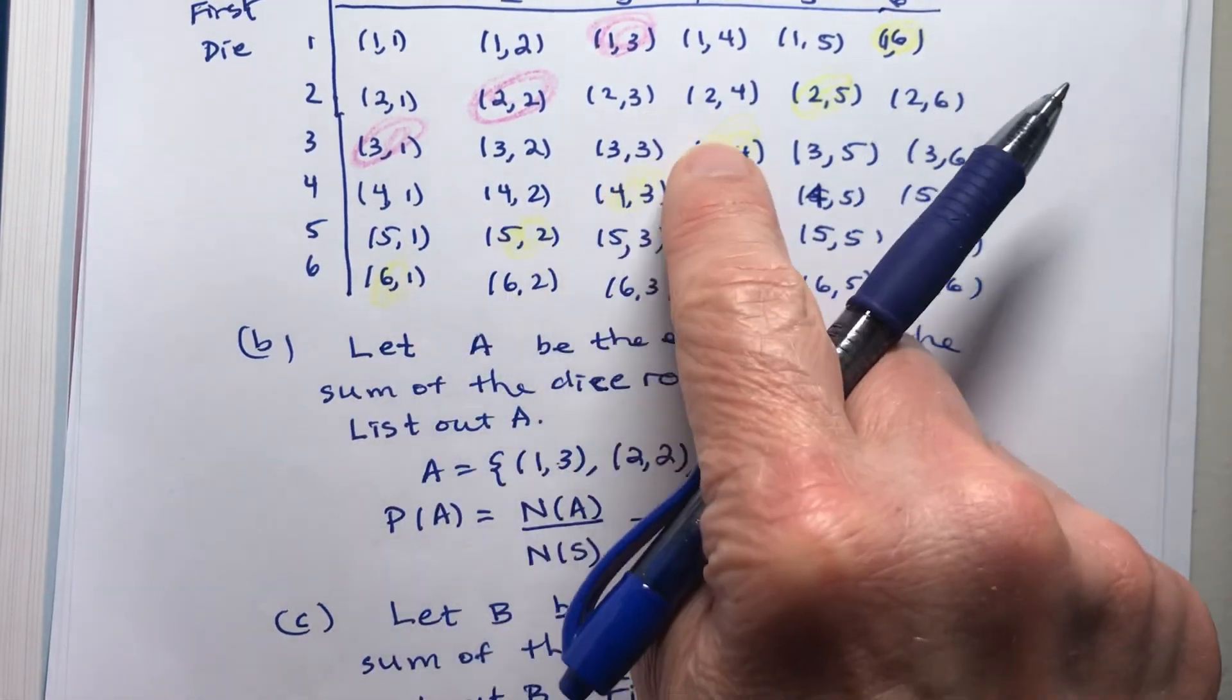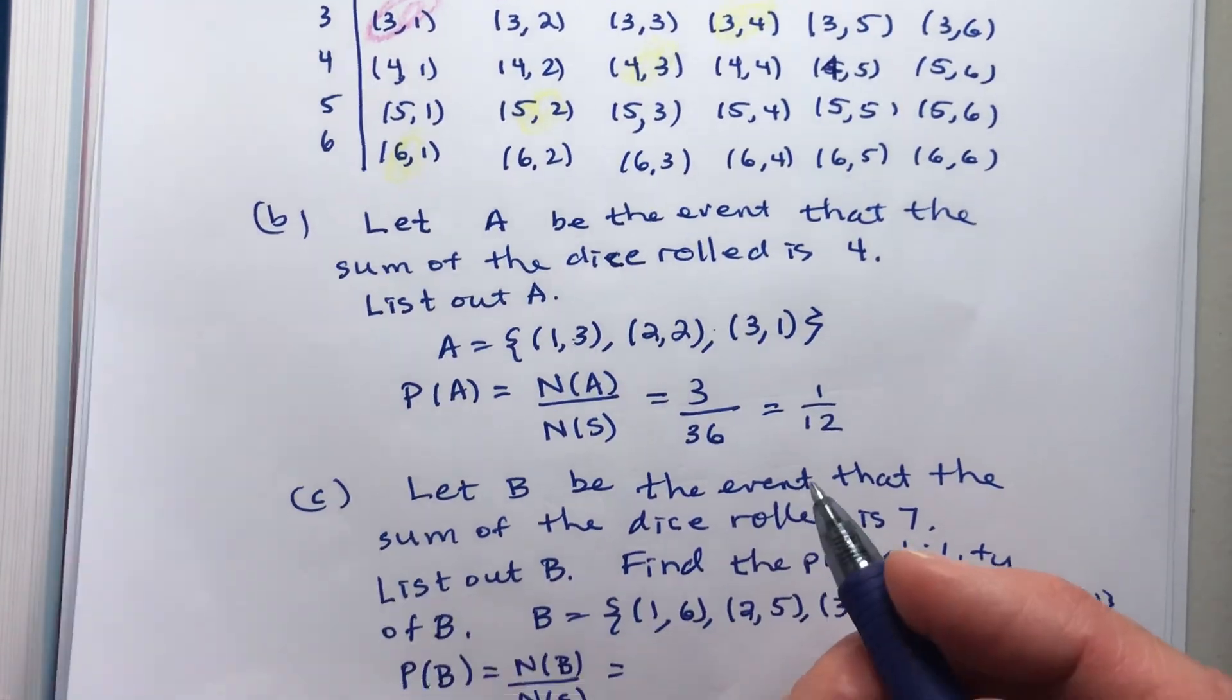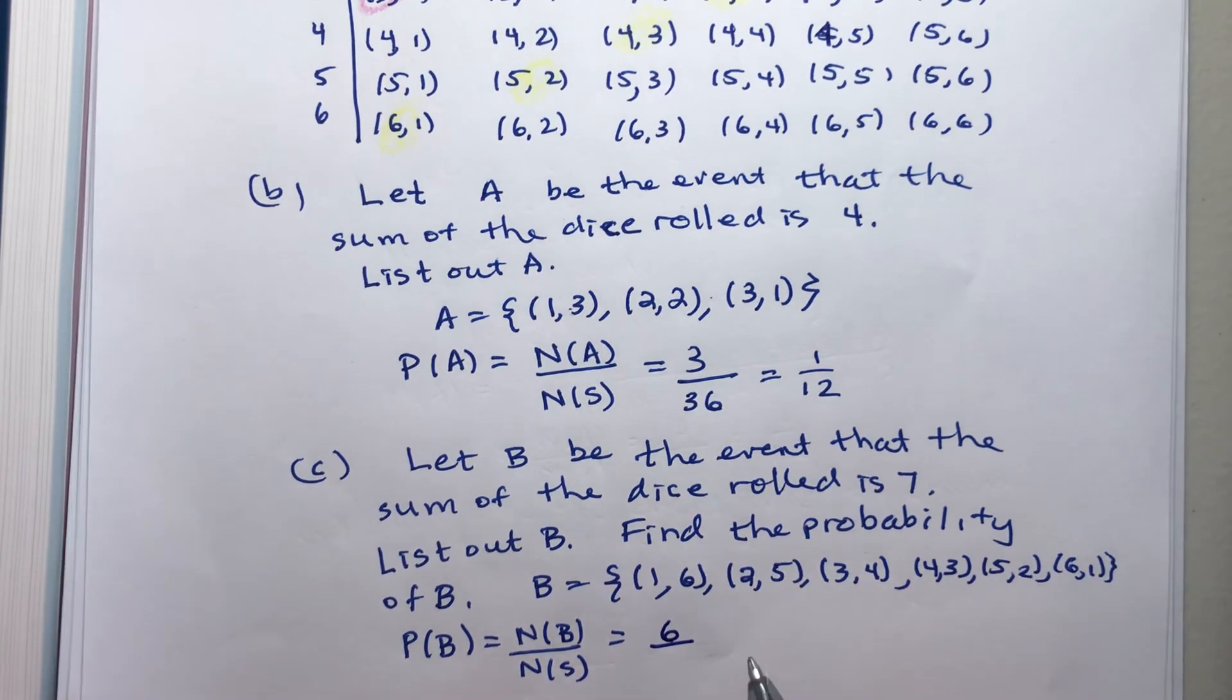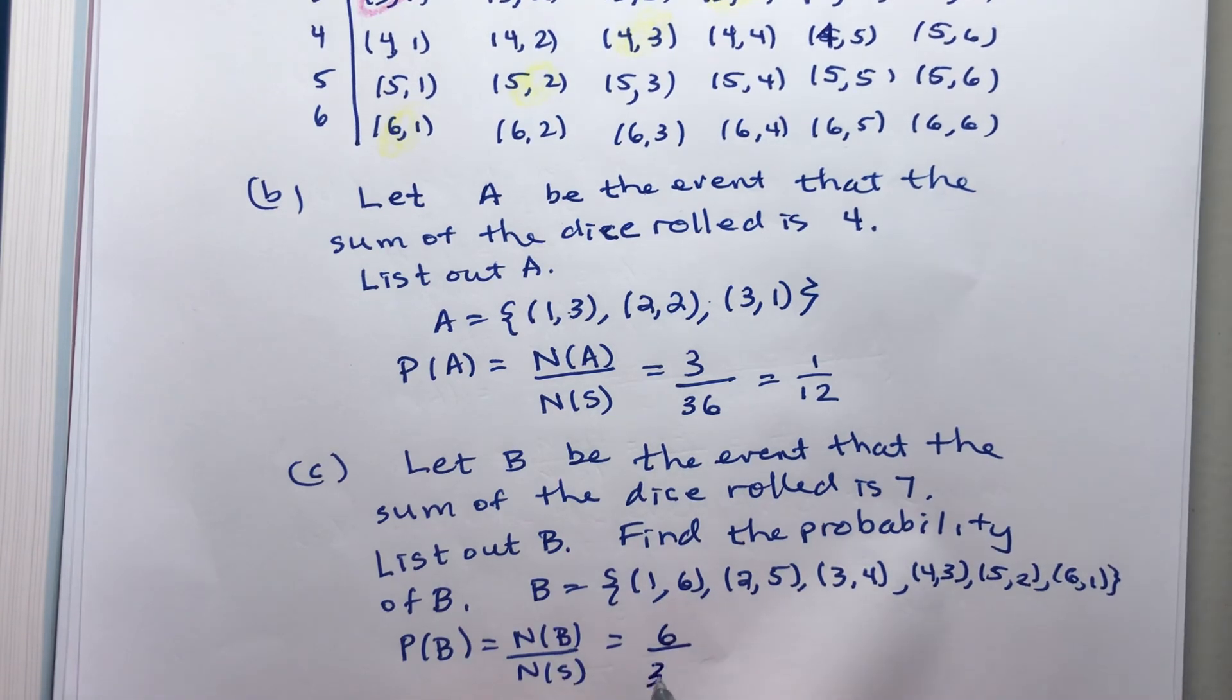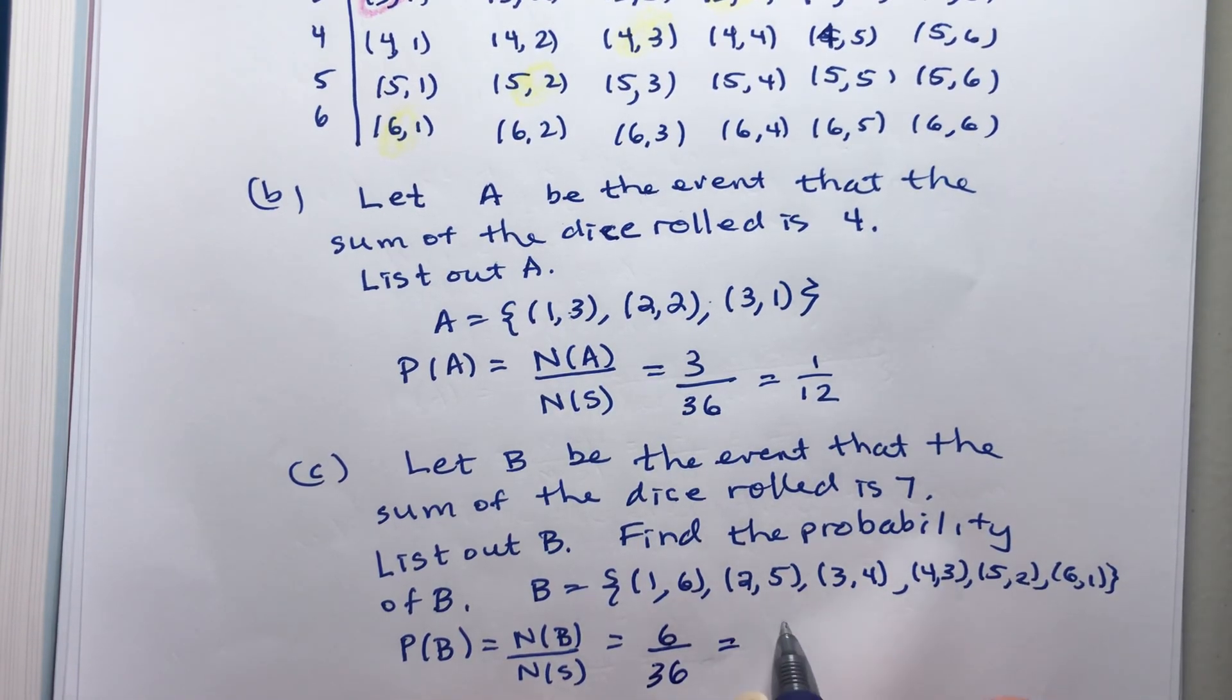One, two, three, four, five, six are colored in. And how many in total are there things that can happen? There's 36. And that makes one-sixth.